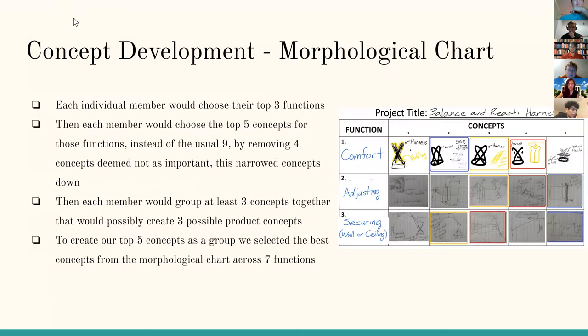For the morphological chart, each member chose the top five concepts for their top three functions, and grouping those together to create three possible product concepts. We then selected our top five product concepts as a group from the morphological chart across seven functions.